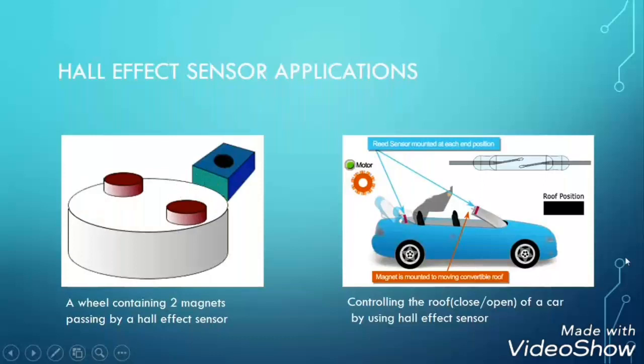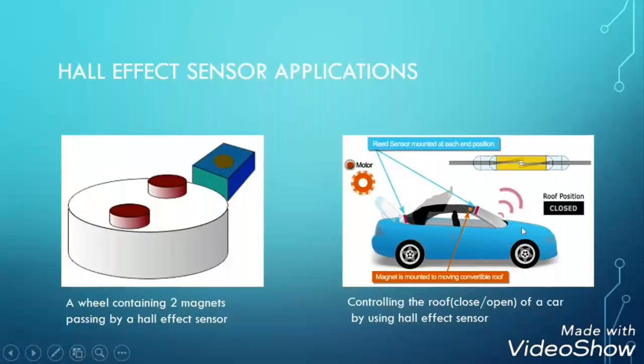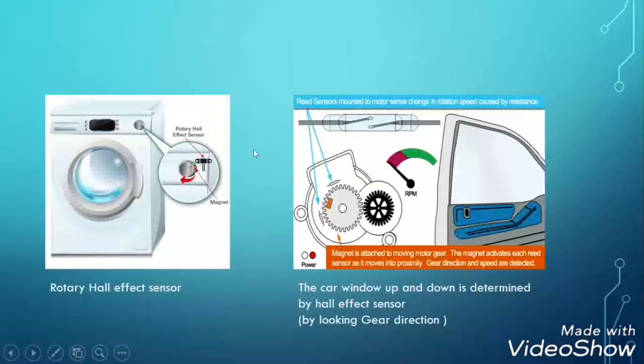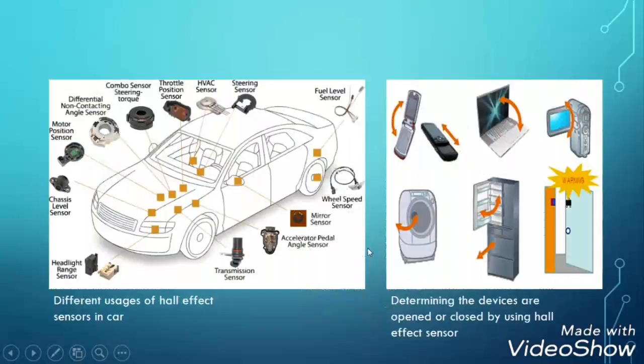By using a Hall effect sensor, we can control the wheel of a car. We can also use it in a washing machine, and we can also control the car window up and down by Hall effect sensor. There are many applications in cars using Hall effect sensor. Hall effect sensor is also used to determine if devices are open or closed.